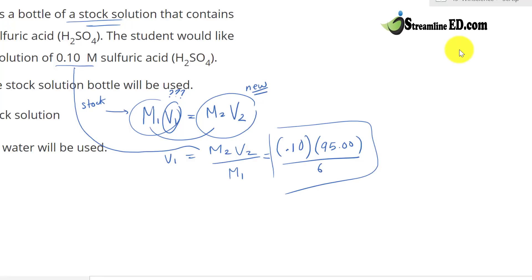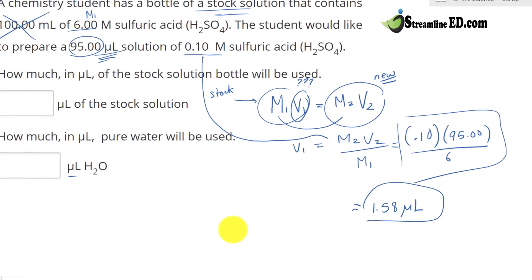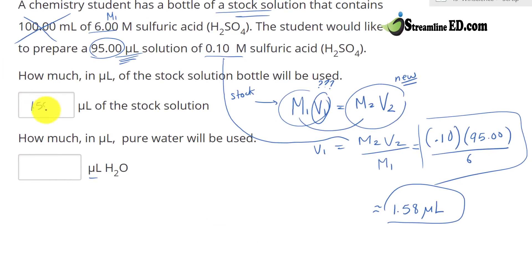This gives us 1.58 microliter. Now do you see this doesn't have to be in milliliter or liter. It's just going to be the same unit that we have right there. And that's the beauty behind it. So this is 1.58.